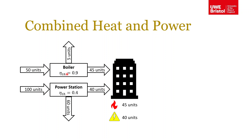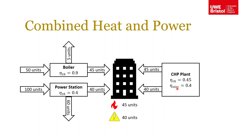That's how we would conventionally supply power and heat to this building — through the power station and through a boiler. Now let's replace this with a combined heat and power plant. This CHP plant provides our 45 units of thermal energy and our 40 units of electrical energy. Let's say the electrical efficiency is the same — that's a reasonable assumption since it operates on similar thermodynamic cycle principles. Let's say the thermal conversion efficiency is lower, around 45 percent.